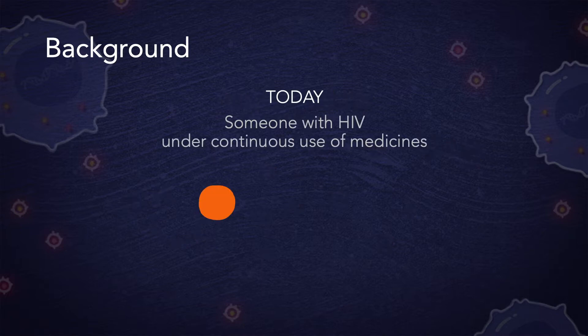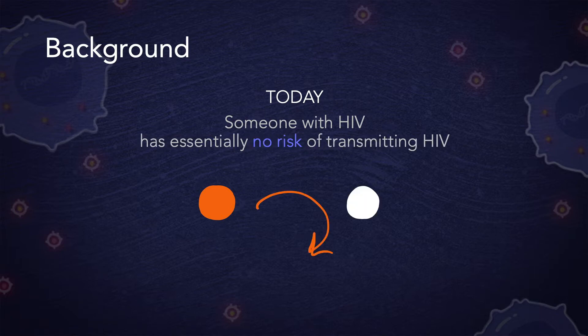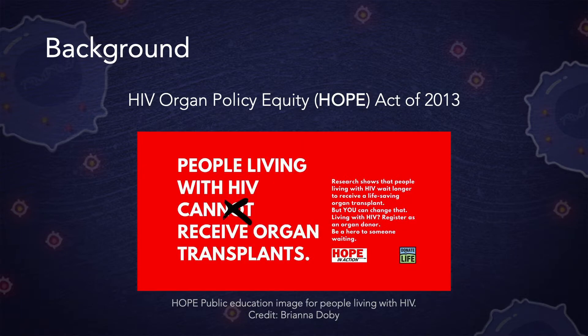Today, however, someone with HIV under continuous use of HIV medicines can live a long and healthy life with essentially no risk of transmitting HIV. People with HIV on the organ waitlist face an increased risk of dying and lowered access to transplantation. Fortunately, the HOPE Act of 2013 reversed this outdated ban, which provides more organs for people with HIV on the waitlist.